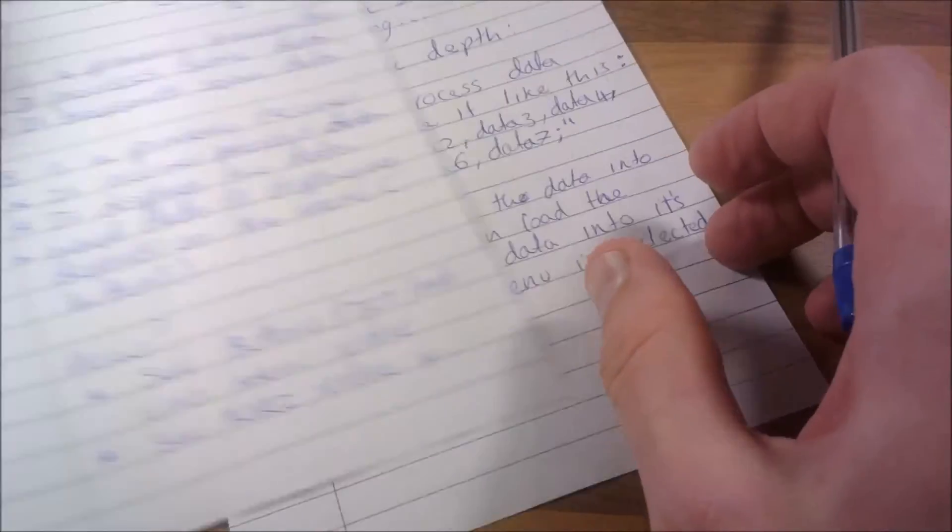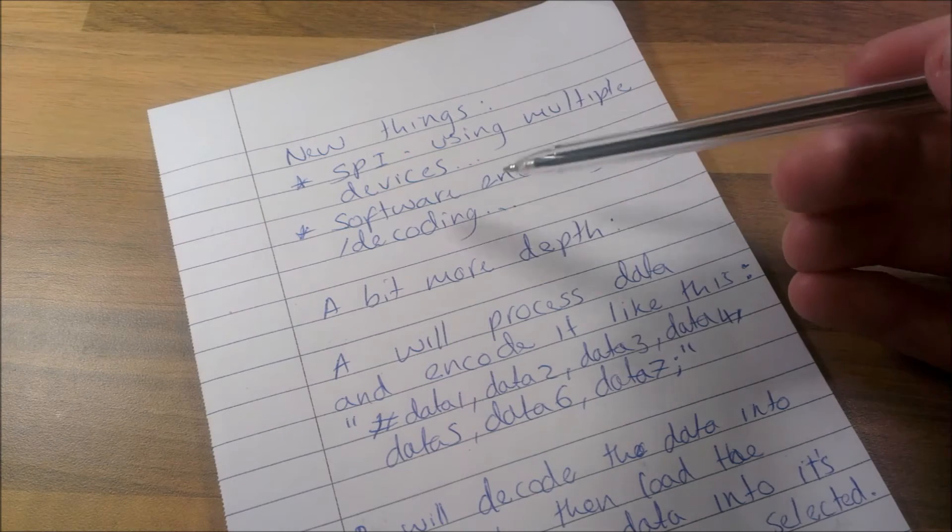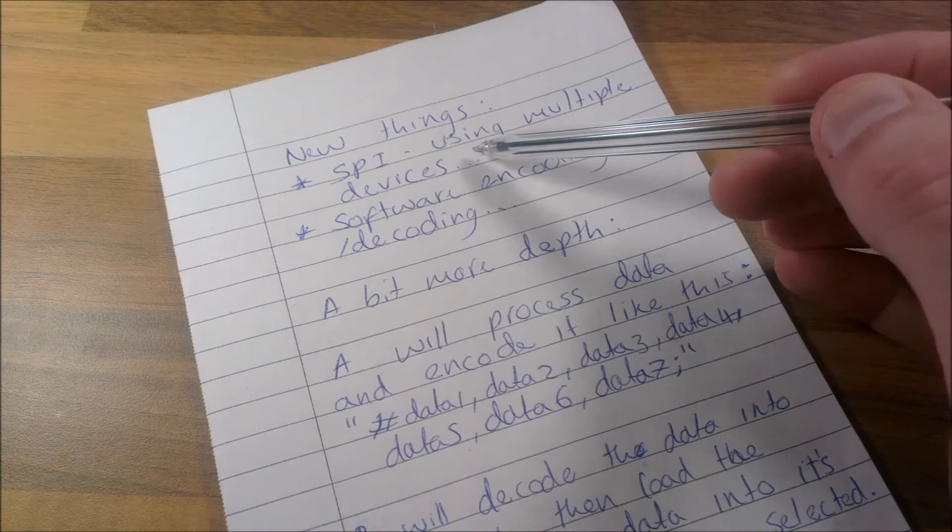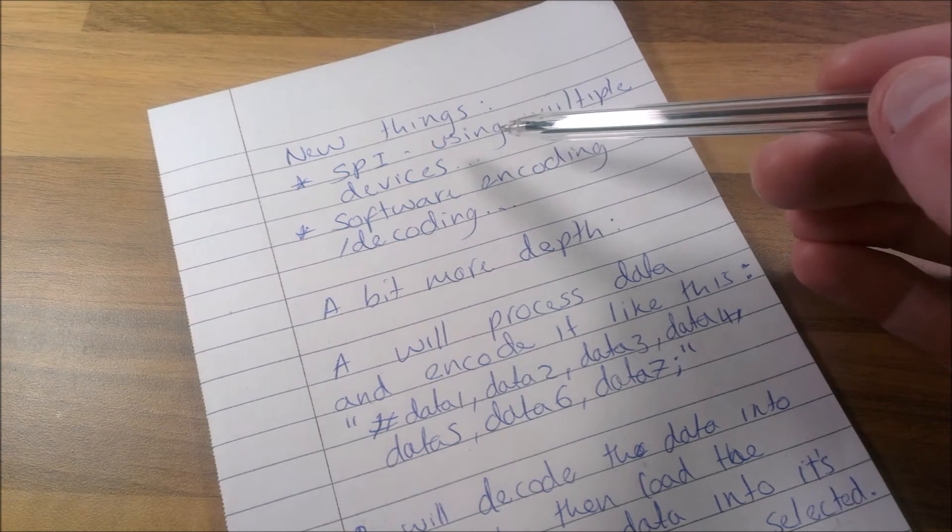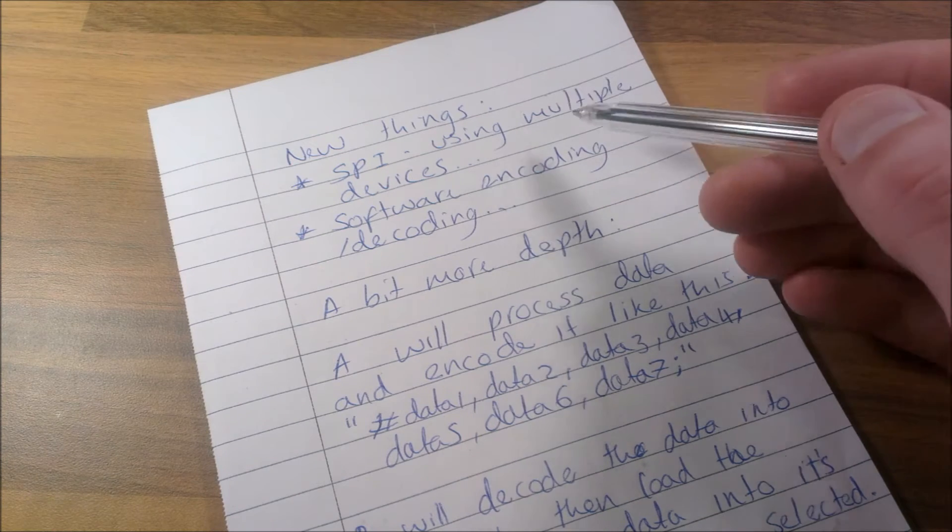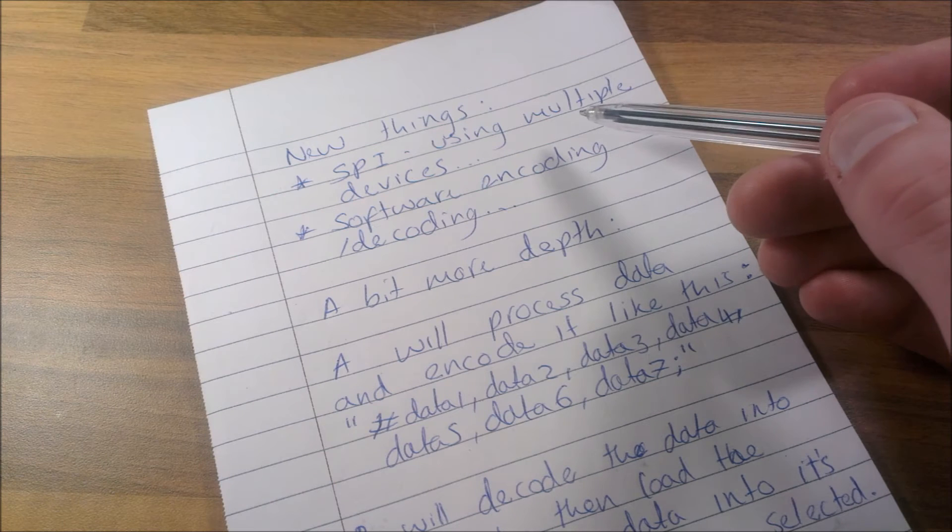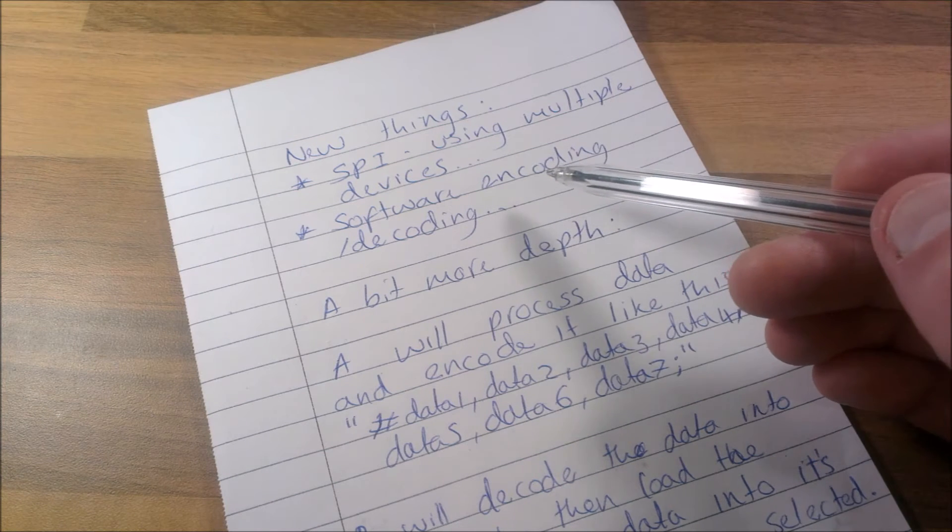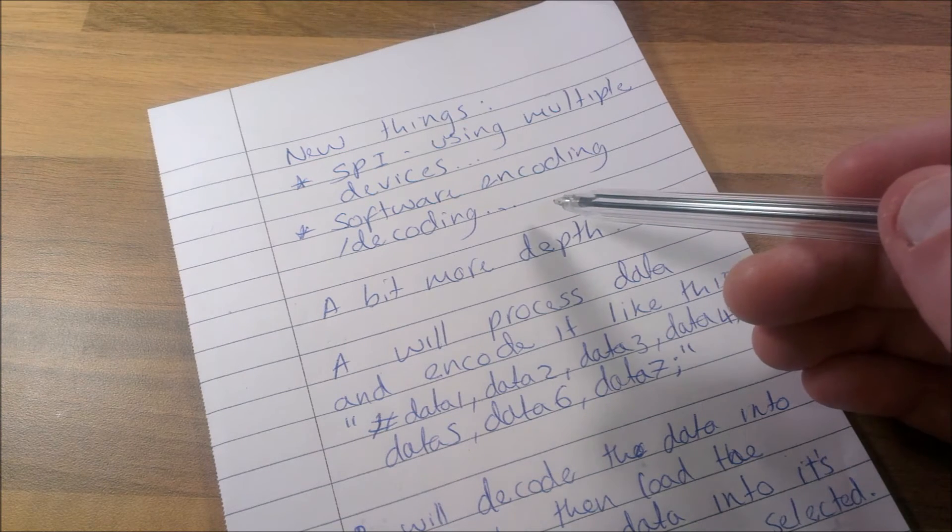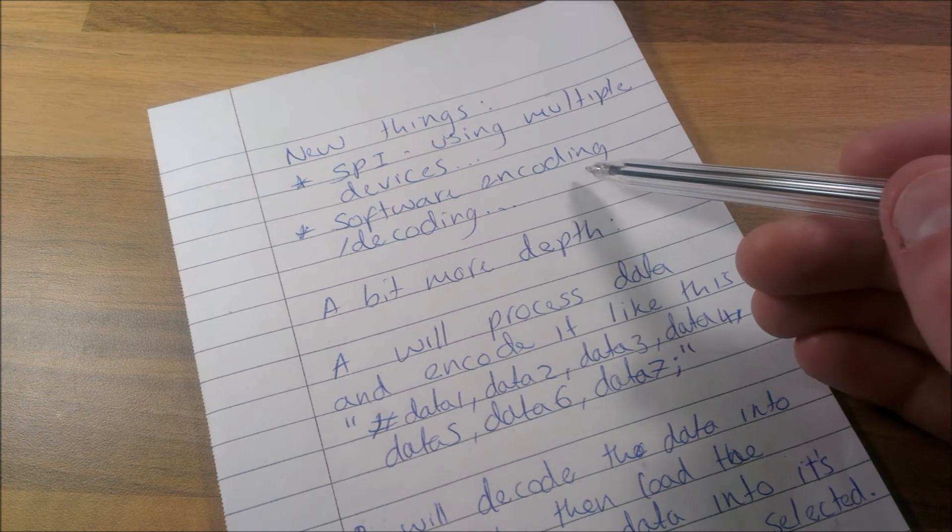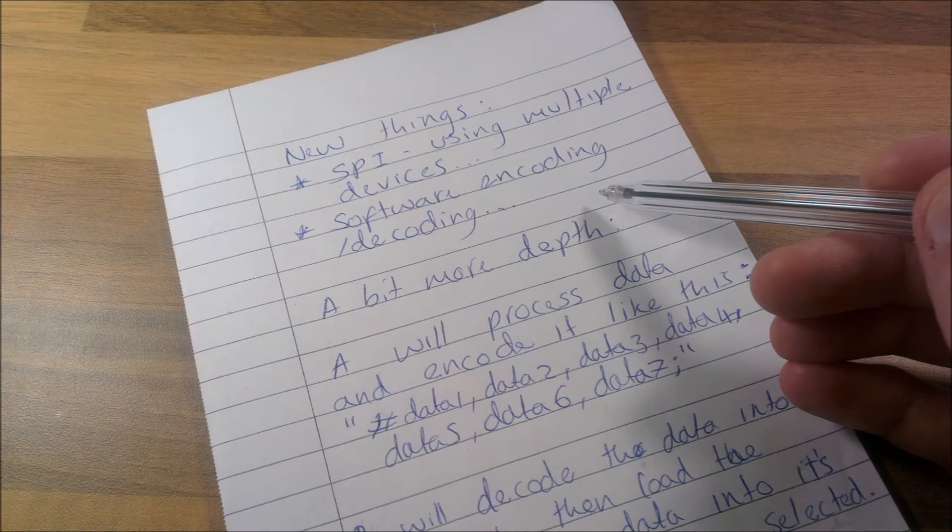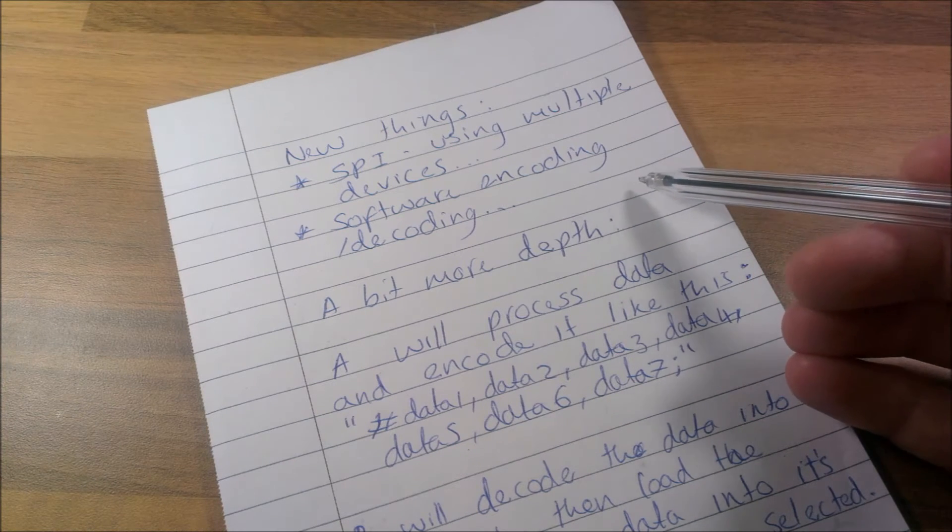New things which I'm going to go through today in this video which I've not gone over in my previous videos: We're going to be using SPI with multiple devices. It revolves around the ChipSelect functionality of SPI, software encoding and decoding. It's a way of transmitting data across to another receiver and then being able to extract bits of data and know which bit of data resolves to what.